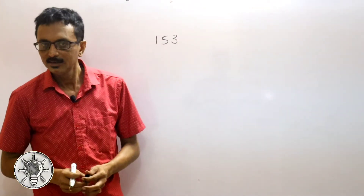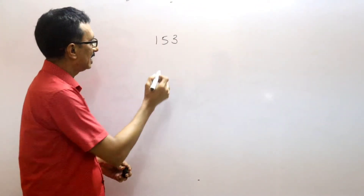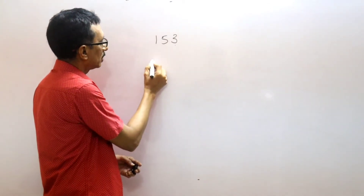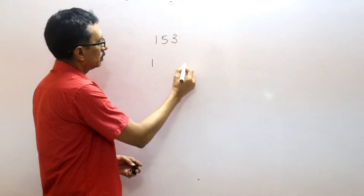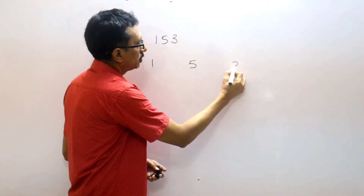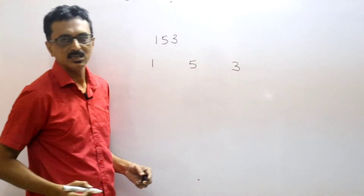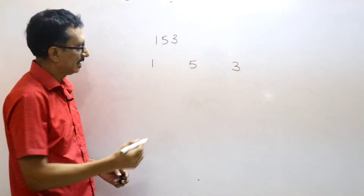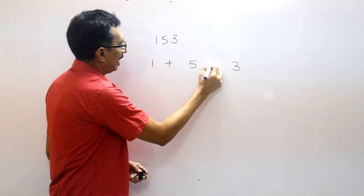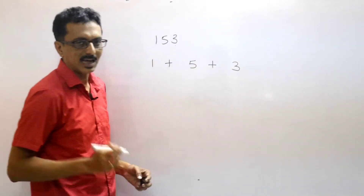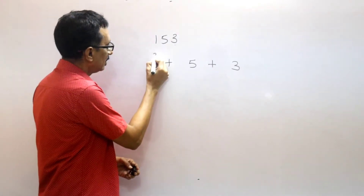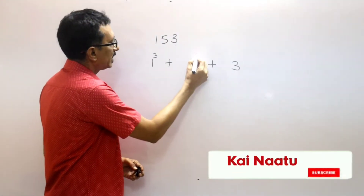This is a special number. If you look at this, you can find an Armstrong number. If you add a cube, you can find a cube.